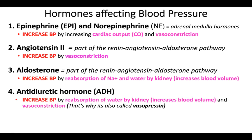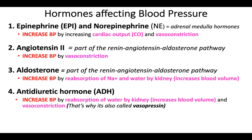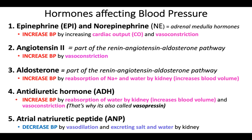A fourth hormone is ADH — antidiuretic hormone. It helps increase blood pressure by reabsorption of water, which also increases blood volume. This hormone also acts on blood vessels as a vasoconstrictor, and for that reason it is often called vasopressin. So these are five hormones — epinephrine, norepinephrine, angiotensin 2, aldosterone, and antidiuretic hormone — that all work to keep blood pressure up.